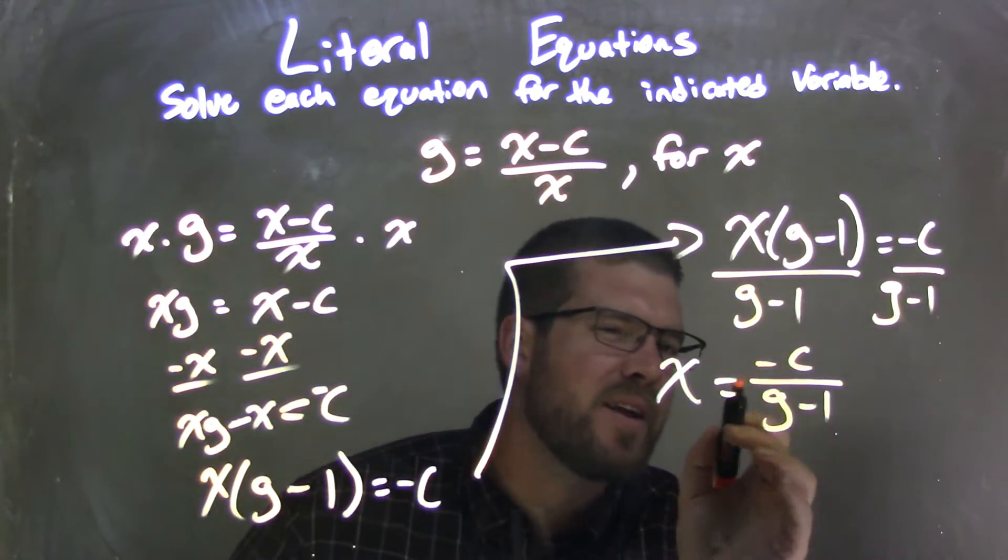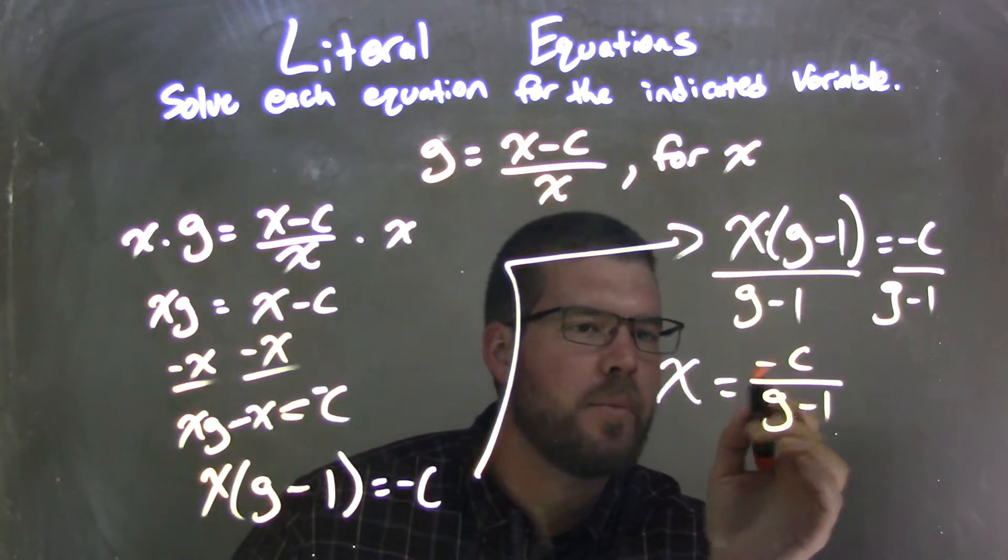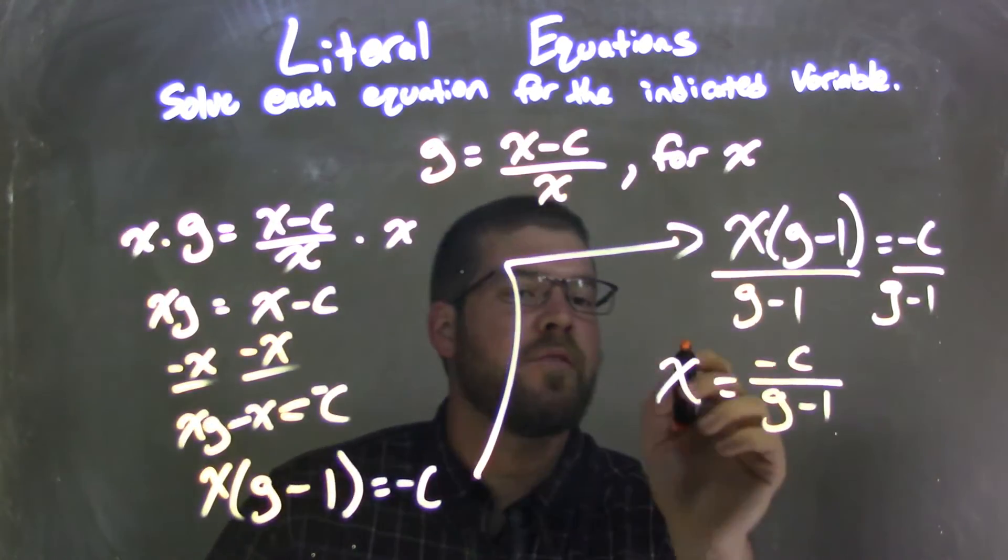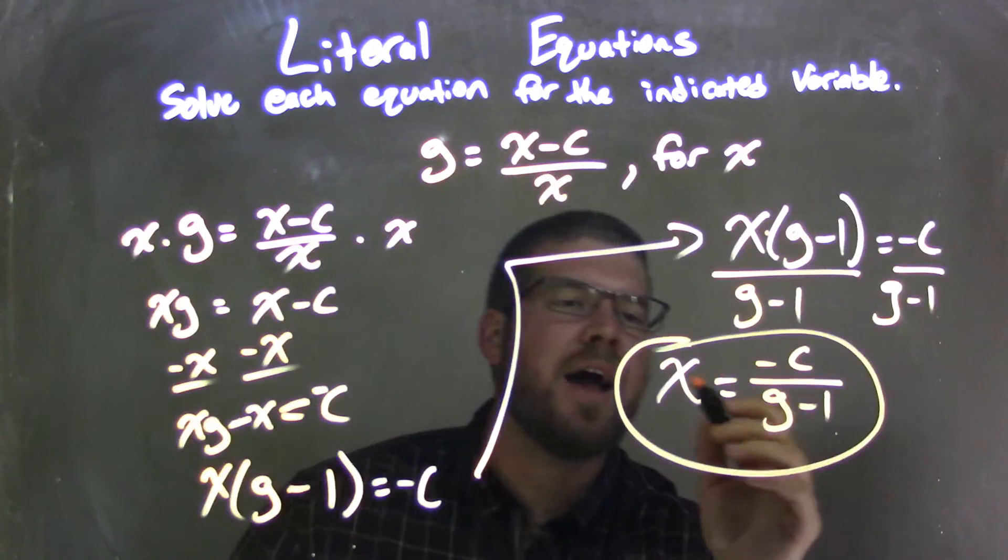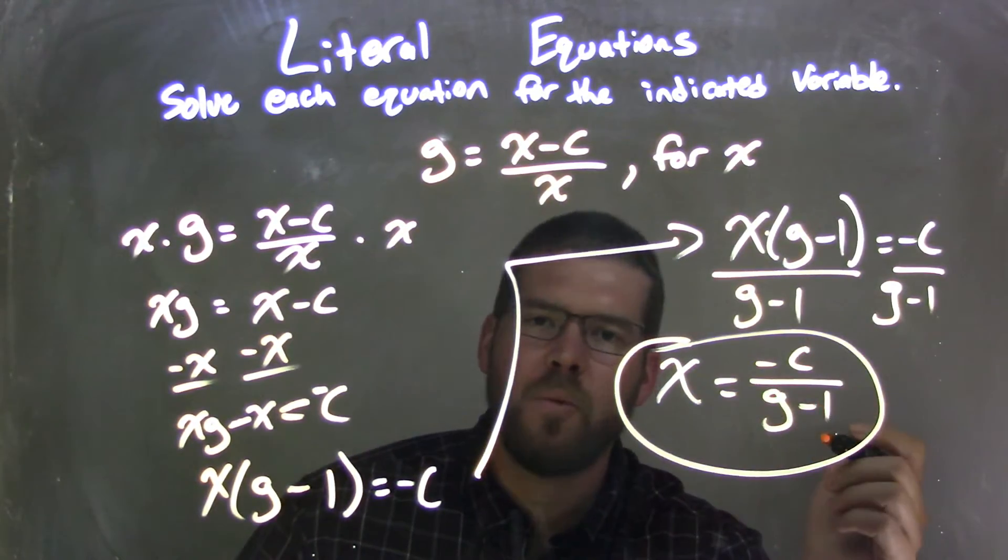Now, sometimes people have the negative out front here, but it's the same thing. Negative c in the numerator and negative out front are equivalent. So our final answer, x is isolated, is x equals negative c over g minus 1.